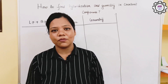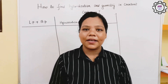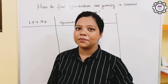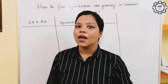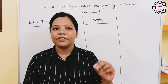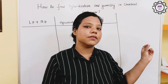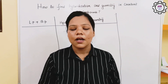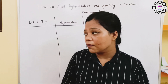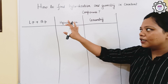Welcome to Modern Group of Education. Today we will try to find the hybridization and geometry of certain covalent compounds. These types of questions come in various chapters like chemical bonding and also in P block, so these are very important topics. To find hybridization and geometry, we need lone pair plus bond pair.